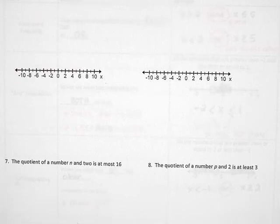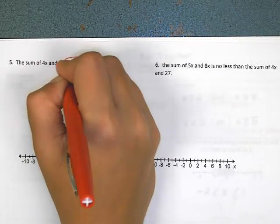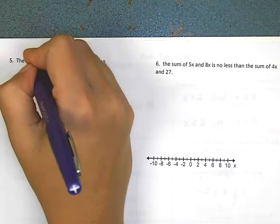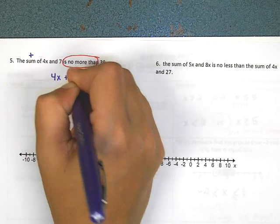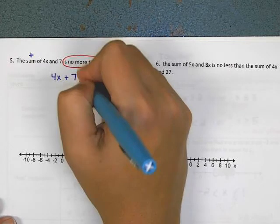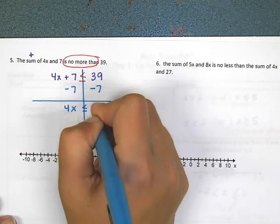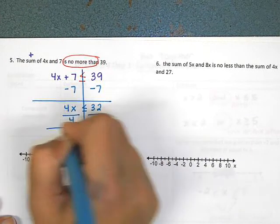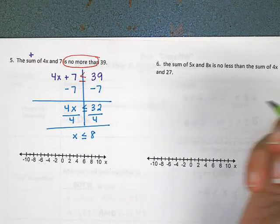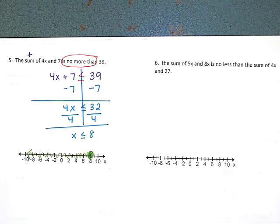Problem 5 says 'the sum of 4x and 7 is no more than 39.' 'No more than' means less than or equal to. 'Sum' means addition, so 4x + 7 ≤ 39. To solve, I subtract 7 on both sides to get 4x ≤ 32, then divide by 4 to get x ≤ 8. For the graph, I put a closed circle on 8 and shade to the left, because less than always gets shaded to the left.